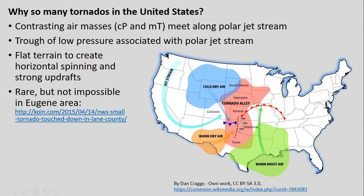This is not to say that tornadoes can't form elsewhere. There's actually an example where, relatively rarely, a tornado touched down in Lane County in the Eugene area a few years ago — you can look up that link. It just happens a lot less commonly because all the right conditions needed to produce tornadoes, especially large ones, are much less often present in the more mountainous western United States.